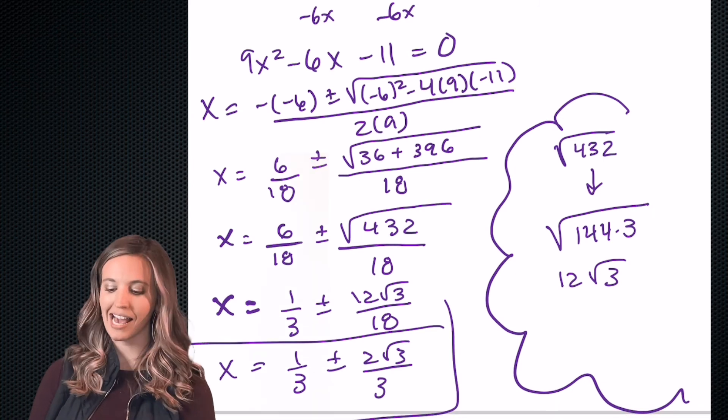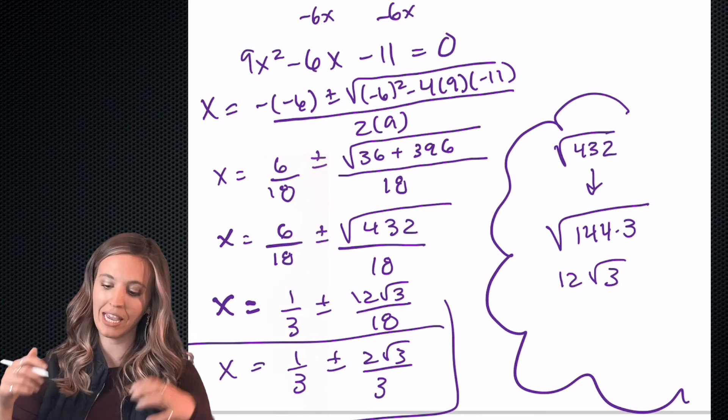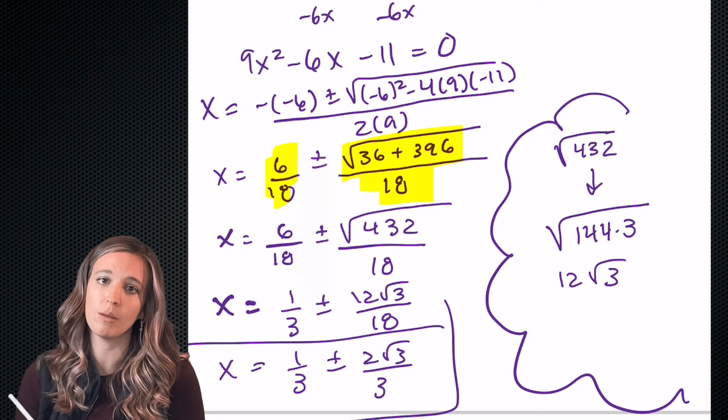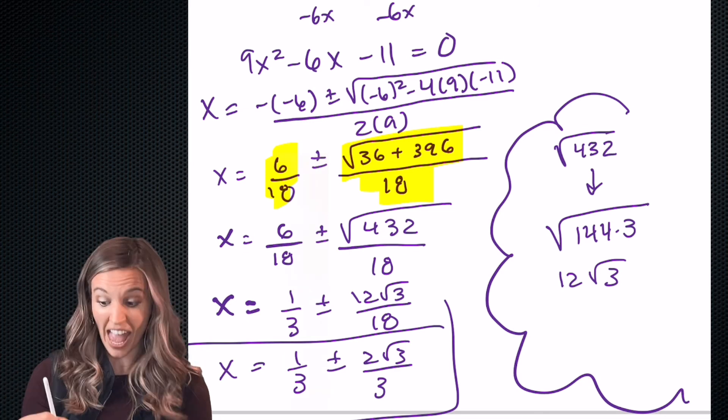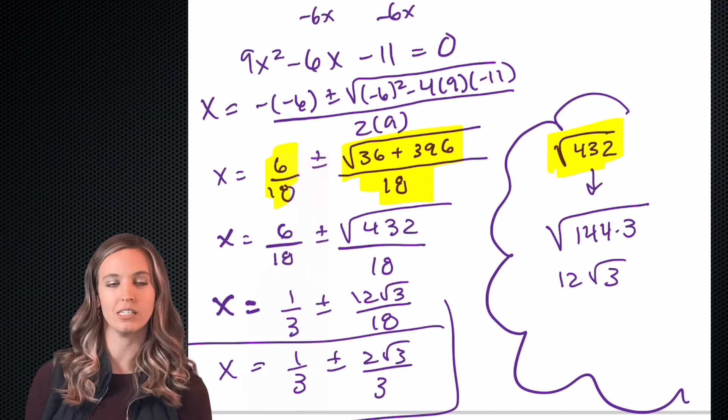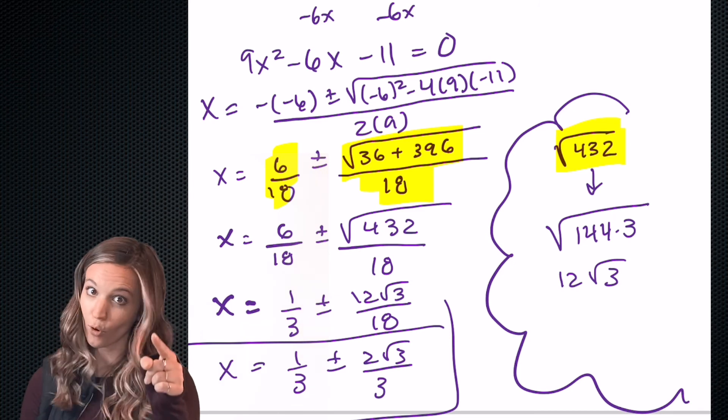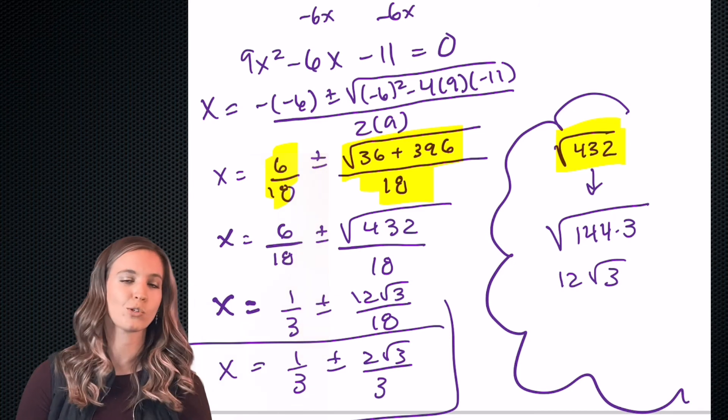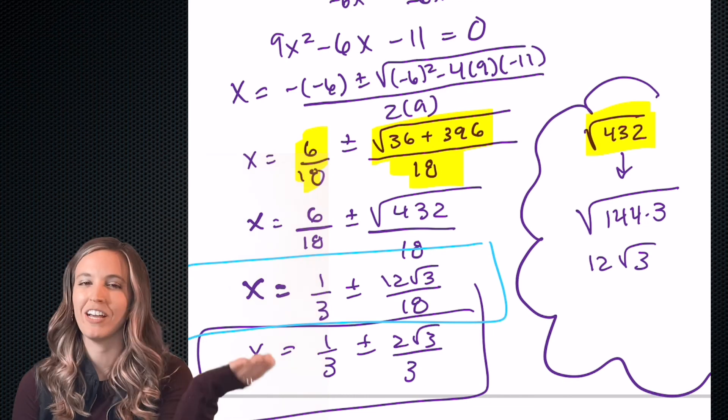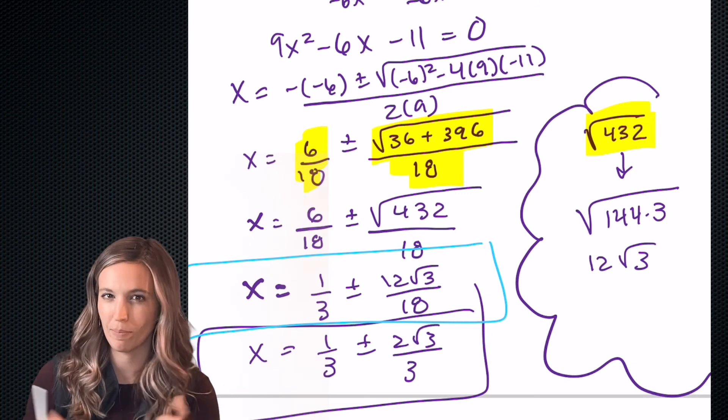All right, I got x equals one third plus or minus 2 root 3 over 3. Now notice that I did split my answer, so right here I wrote two separate fractions. That was just so I'd make it easier to simplify at the end, so you can do that as well. Then when I got to my square root of 432, I knew that I had to simplify. After doing some number crunching, I figured out that 144 times 3 is 432, so 144 is a perfect square, so 12 root 3. Then at this step, you can see I already simplified the 6 divided by 18 into 1 third plus or minus 12 root 3 divided by 18.